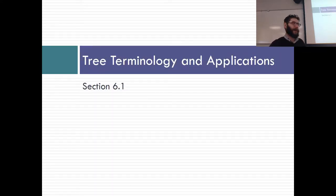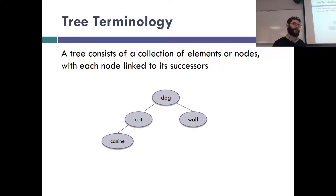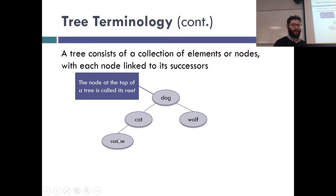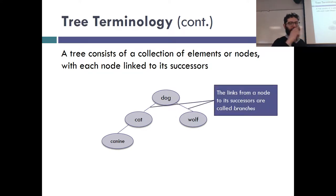So I've been throwing out terms — successor, children, parent, root. Let's define those, leveraging your knowledge of botany and family trees. A tree is a collection of elements or nodes, and every node is linked to its successors. The node at the top is called the root of the tree. The links from a node to its successors are called links or branches — either term works.